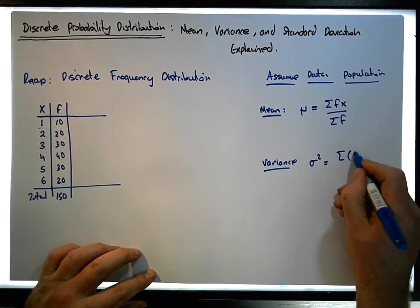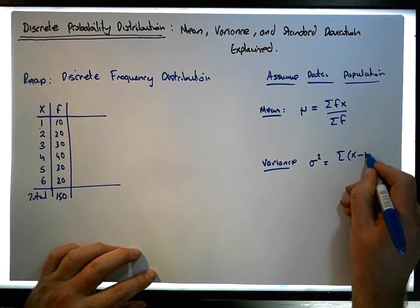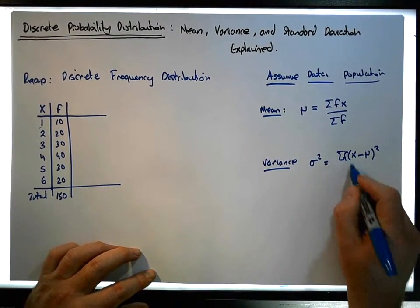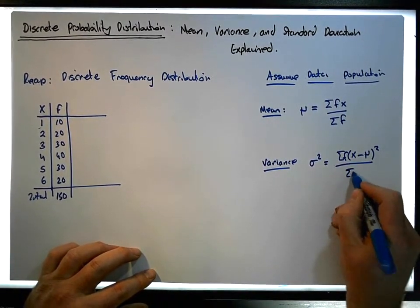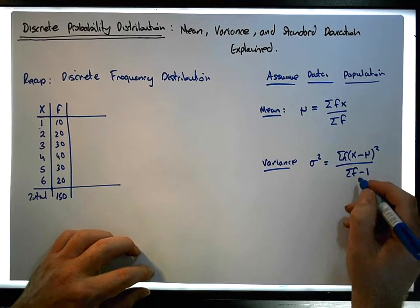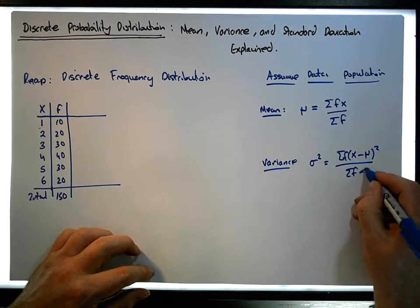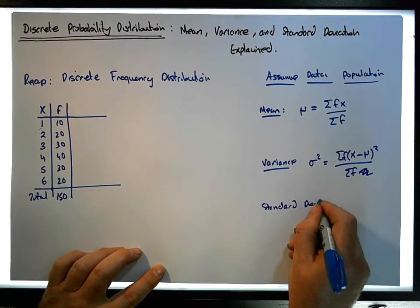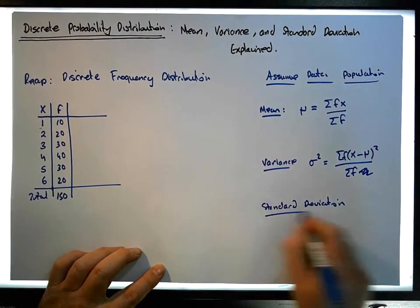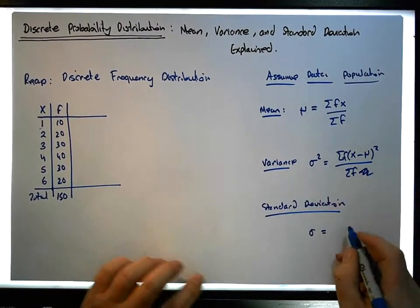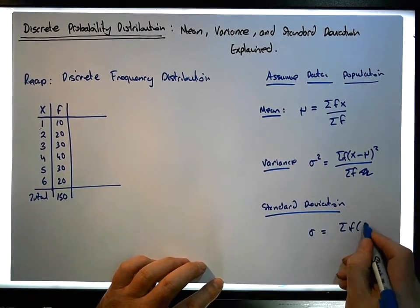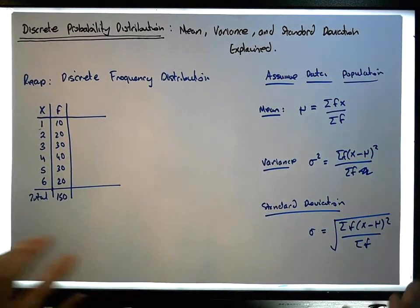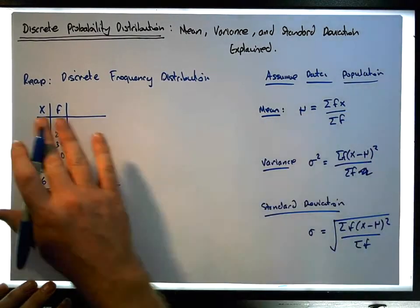Since this is a frequency distribution, each one of these distances occurs f times. This is divided by the sum of the frequencies — that's the population variance. The standard deviation sigma is the square root of the variance: it's the sum of the frequencies times (x minus mu) squared, divided by the sum of the frequencies, and then take the square root of that.